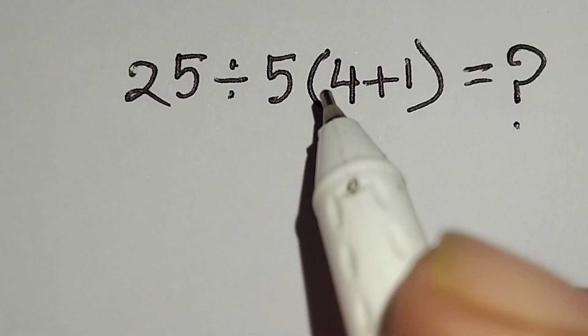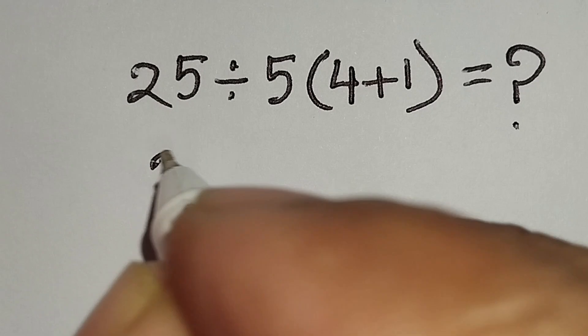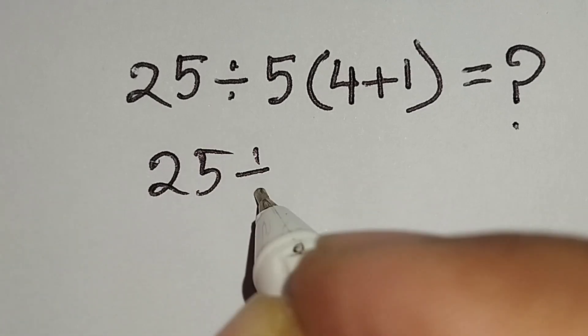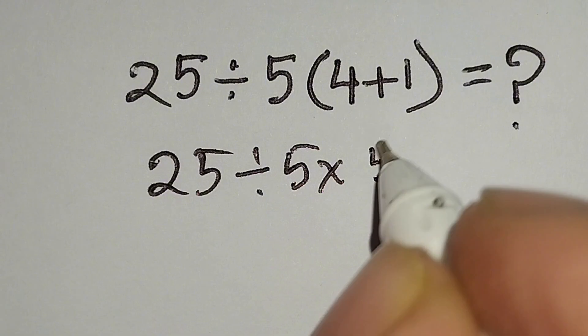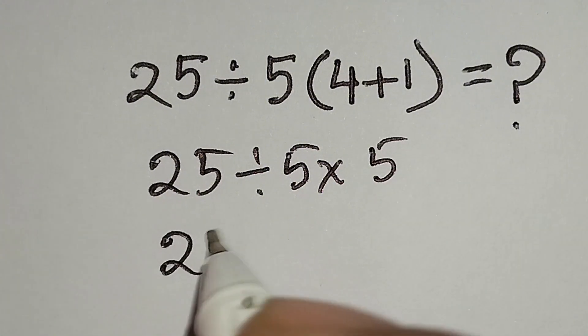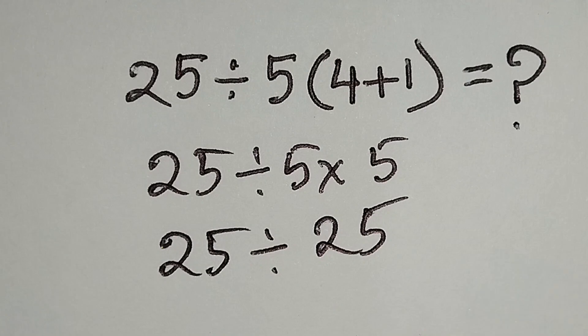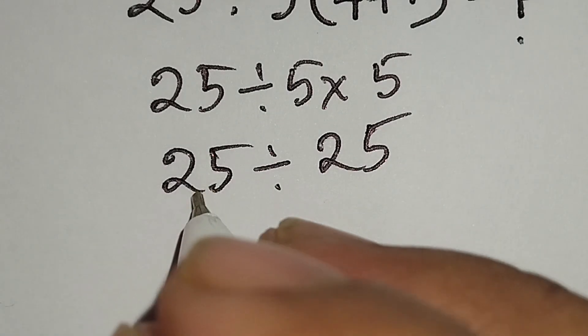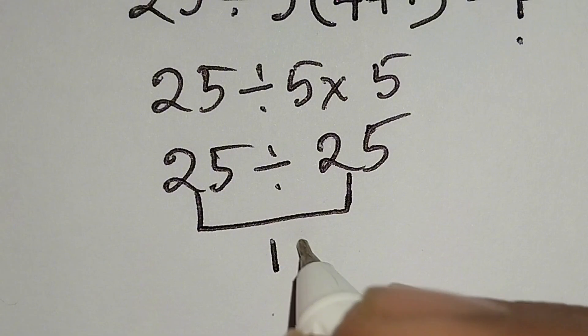25 divided by 5 bracket 4 plus 1 equals what? Here this 25 divided by this 5, this 4 plus 1 gives us 5. Here 25 divided by 5 times 5 gives us 25. Here 25 divided by 25 gives us 1. But it is not correct.